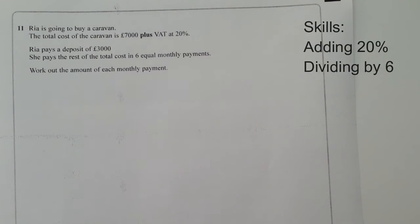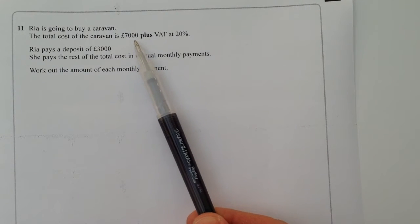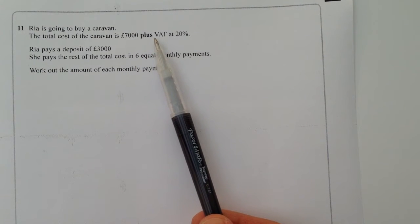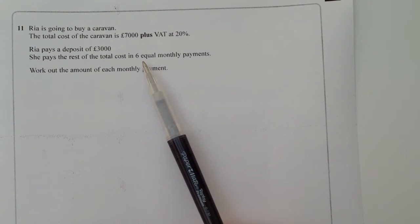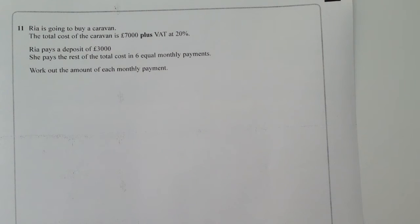Hi, so in this video we're going to work out the cost of £7,000 plus VAT, take away the £3,000 deposit, and then work out the value of the six equal monthly payments.